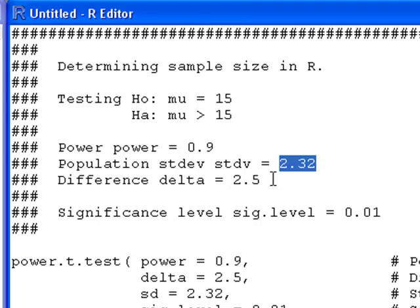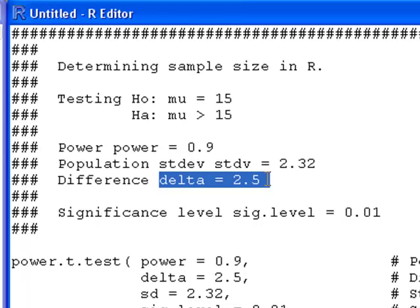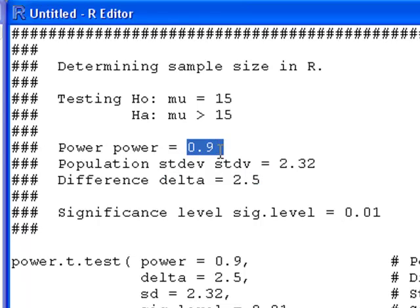And I also need to know how big of a difference is important to find. I need something bigger than 15. Well, 15.01 is bigger than 15, but is that useful? So when I think of power I think of, well if there's a difference that's 2.5 units, that's what I picked here, 2.5 units bigger than mu, I want to be able to find that with probability 0.9.